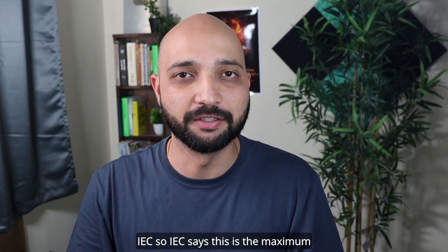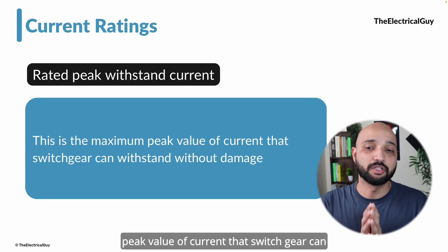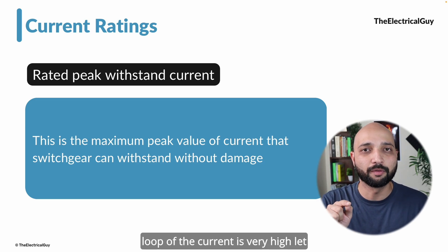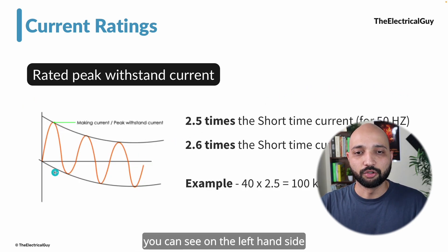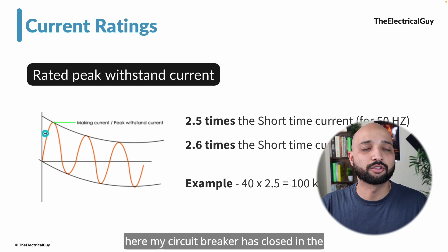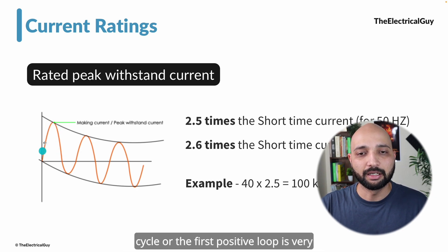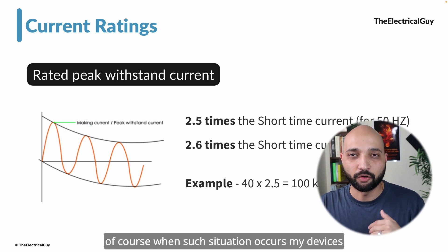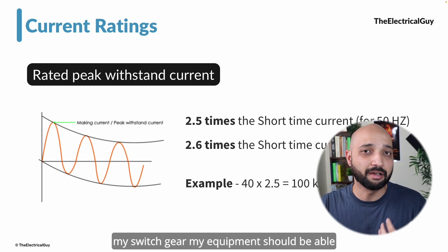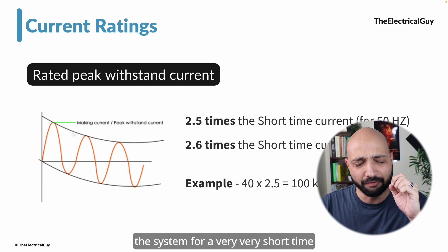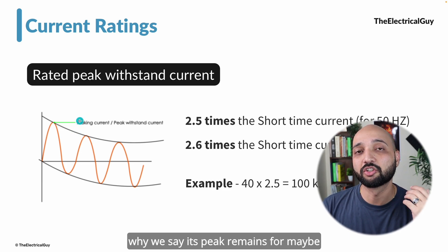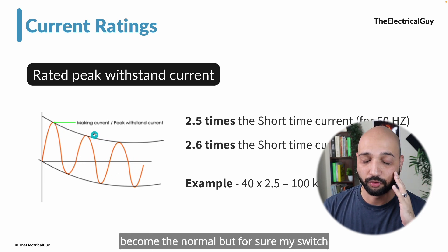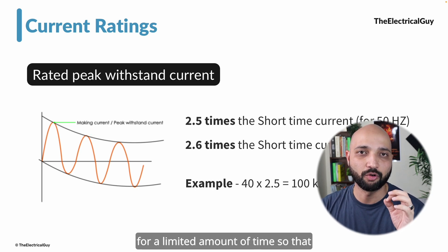The IEC defines rated peak withstand current as the maximum peak value of current that switchgear can withstand without damage. When the circuit breaker closes into an existing fault, the first positive loop of the current is very high — this is called the making current or peak withstand current. My switchgear and equipment should be able to withstand this current. This peak remains in the system for a very short time — perhaps just one half cycle, a few microseconds — and then it goes down. But the switchgear must be able to carry that current for that limited time without damage.